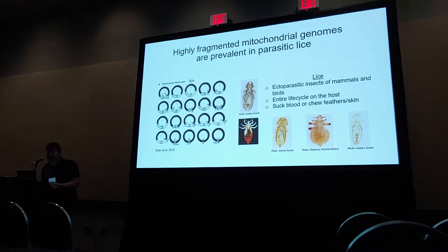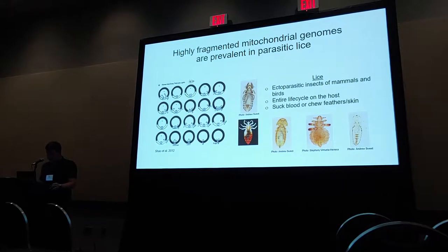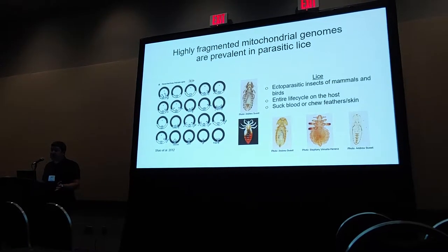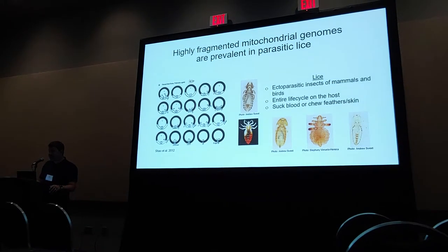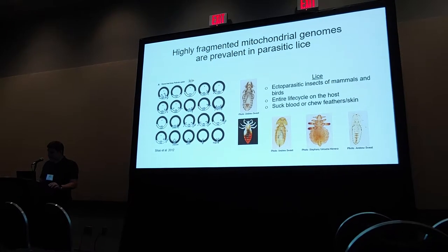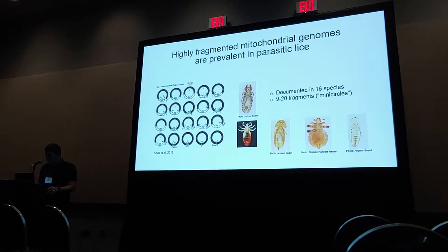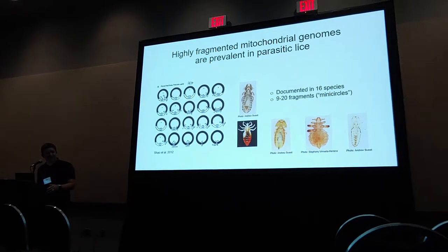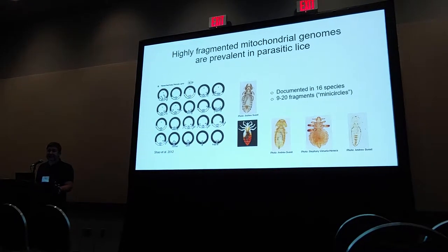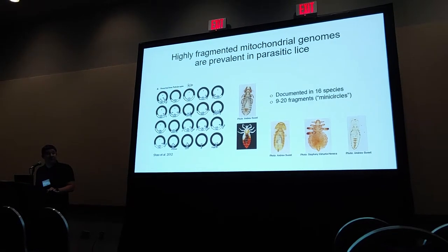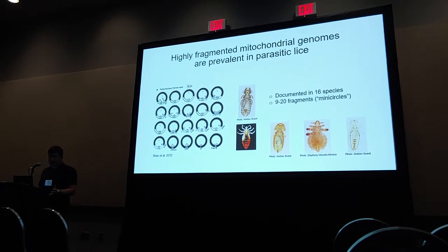The parasitic lice are a particularly interesting case, and it's what I'll be focusing on in today's talk. These insects are ectoparasites of birds and mammals. They suck blood or chew feathers and skin depending on the morphology of the louse, and they spend their entire life cycle on the host. To date there are 16 different species known to have these fragmented mitochondrial genomes, with between 9 and 20 different fragments depending on the species.